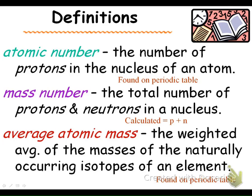The atomic number is found on the periodic table — generally it's the whole number, probably in the upper left-hand corner, though it will differ, so get to know whatever periodic table you're using. The mass number is the total number of protons and neutrons, and remember you can calculate it. If you're not given the specific mass number, round the atomic mass to the nearest whole number. The average atomic mass is the decimal number found on the periodic table, generally below the other number, and we'll talk about how that's found in just a minute.